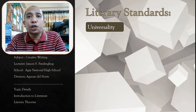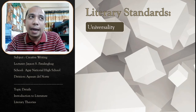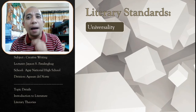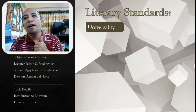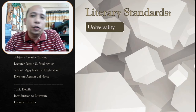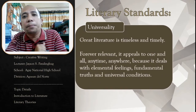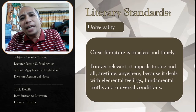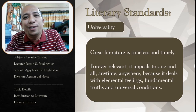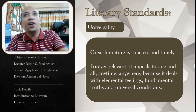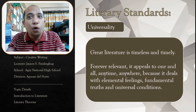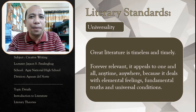Literature is basically standardized. Not all printed materials can be considered a piece of literature — it can only be considered a literary piece if it passes through the standards. The first standard is universality. A good literary piece should have universality, meaning it is timeless and timely. It never gets old, and whatever is real in one part of the world is real in another. It is relevant and appeals to all — everybody can relate, anytime, anywhere.